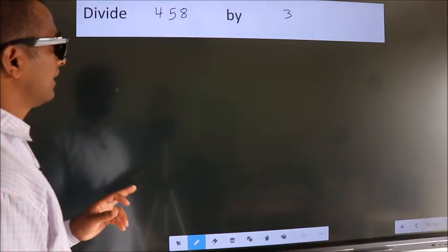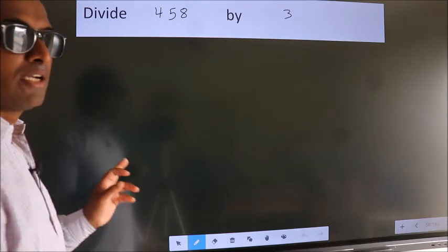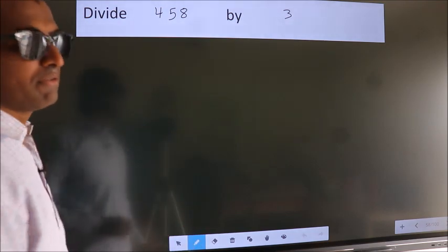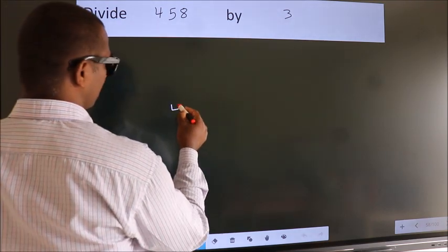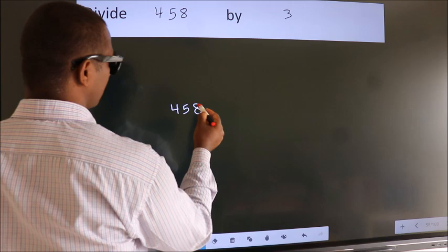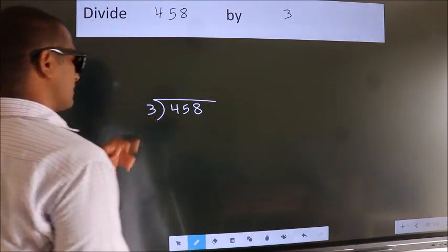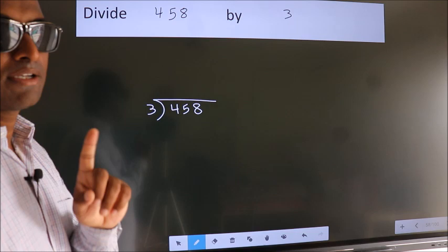Divide 458 by 3. To do this division, we should frame it in this way. 458 here, 3 here. This is your step 1.